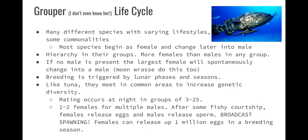Females can release up to one million eggs in a breeding season. The biggest takeaway: if you're broadcast spawning, you're releasing millions of eggs a breeding season. If you're like the salmon or shrimp with eggs on yourself getting fertilized by one male, you only need to produce thousands.